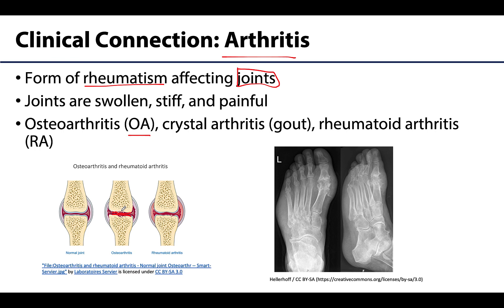Osteoarthritis can happen in many joints of the body. Beyond the hip and the knee, some of the intervertebral joints can all have OA associated with them.